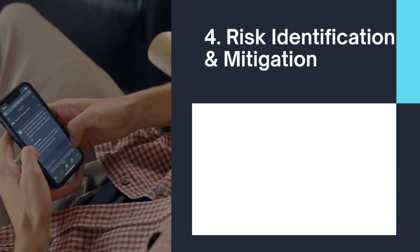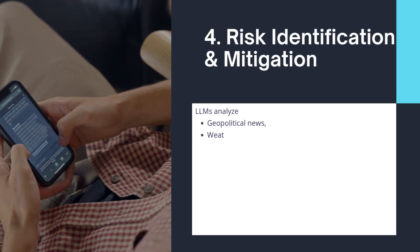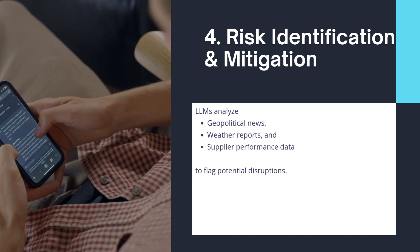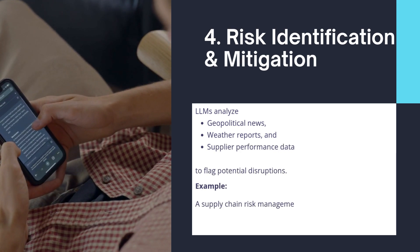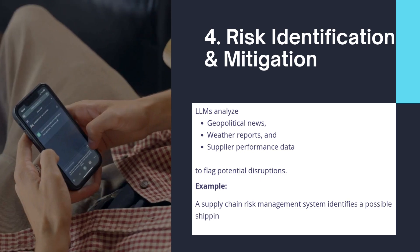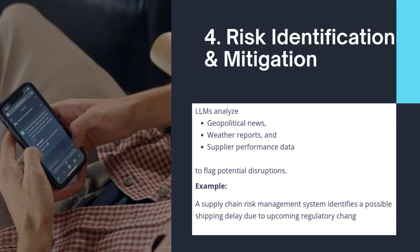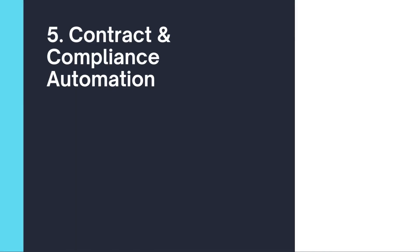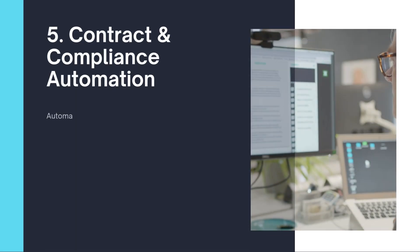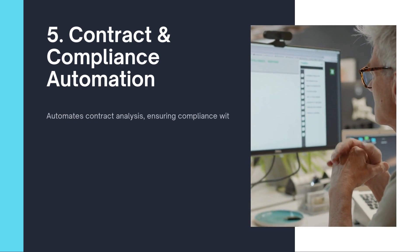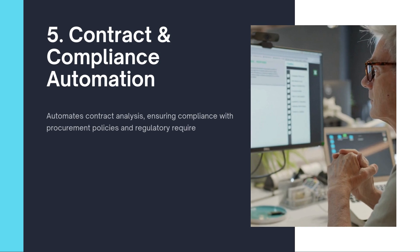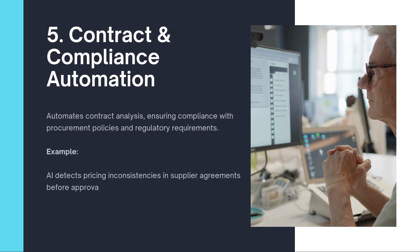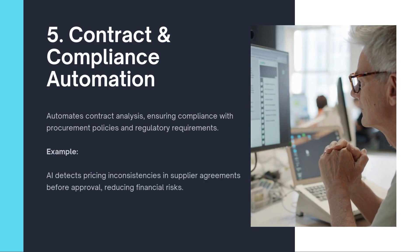Four: risk identification and mitigation. LLMs analyze geopolitical news, weather reports, and supplier performance data to flag potential disruptions. Example: a supply chain risk management system identifies a possible shipping delay due to upcoming regulatory changes and recommends alternative suppliers. Five: contract and compliance automation. Automates contract analysis, ensuring compliance with procurement policies and regulatory requirements. Example: AI detects pricing inconsistencies in supplier agreements before approval, reducing financial risks.